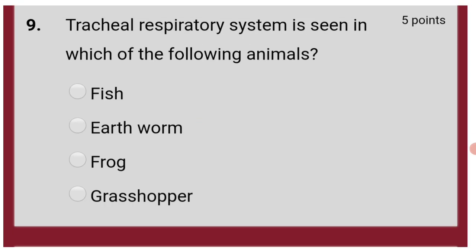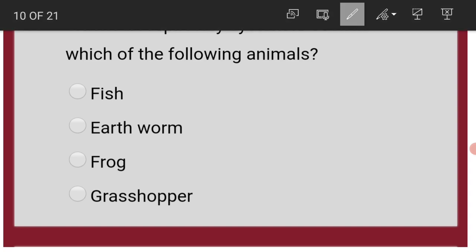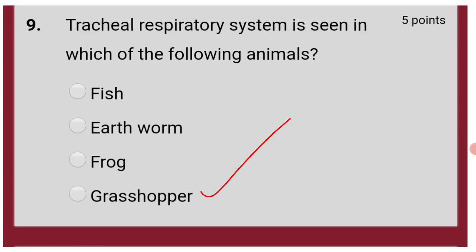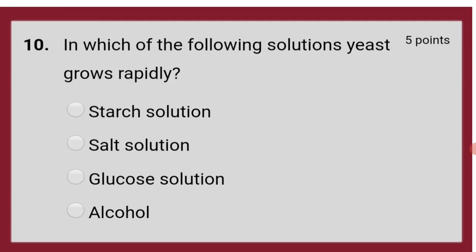Tracheal respiratory system is seen in which of the following animals? That is grasshopper. Tracheal respiratory system is found in insects which belong to the phylum Arthropoda, and grasshopper being an insect, it contains trachea as respiratory organs.